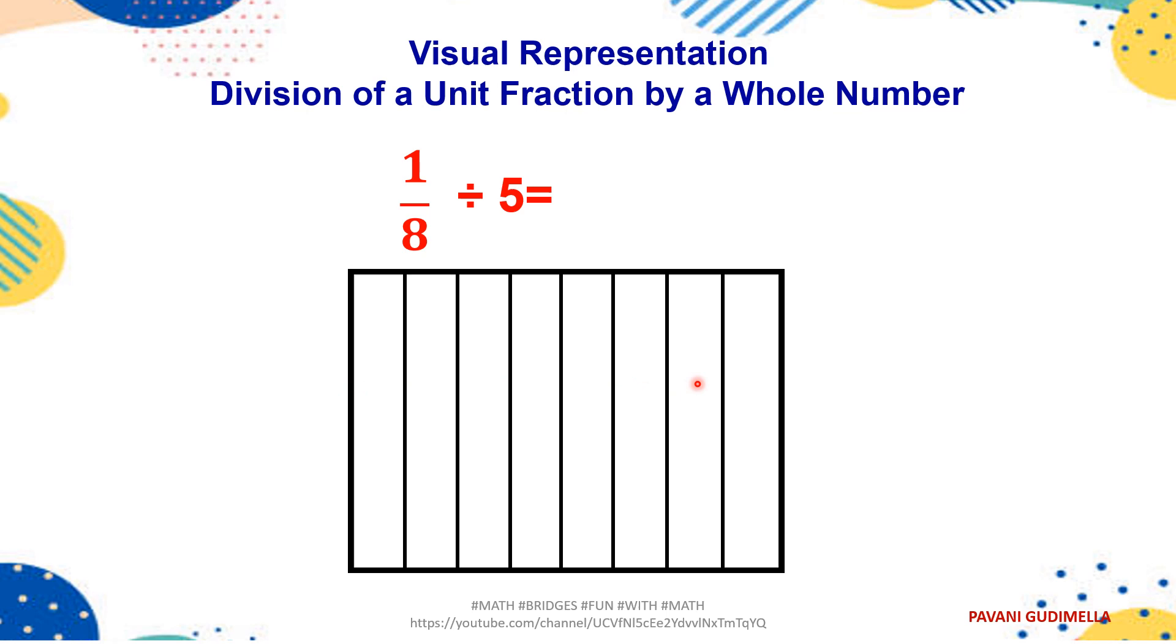This, out of this 8 parts, 1 part is to be shaded. So, we have shaded it in yellow color. This is 1/8. Out of 8 parts, 1 part is being shaded. This 1/8 is to be divided by 5. Means it should be made into 5 equal parts again. See how we are making 5 equal parts: 1, 2, 3, 4, 5 equal parts.